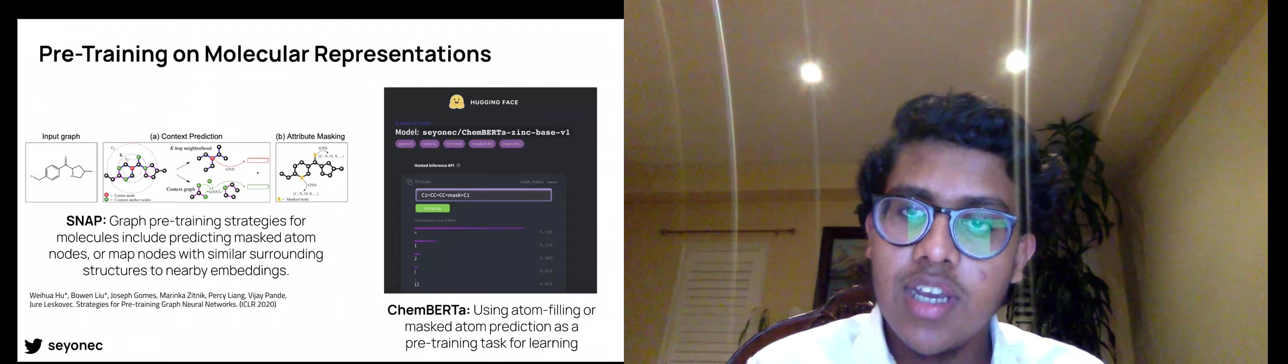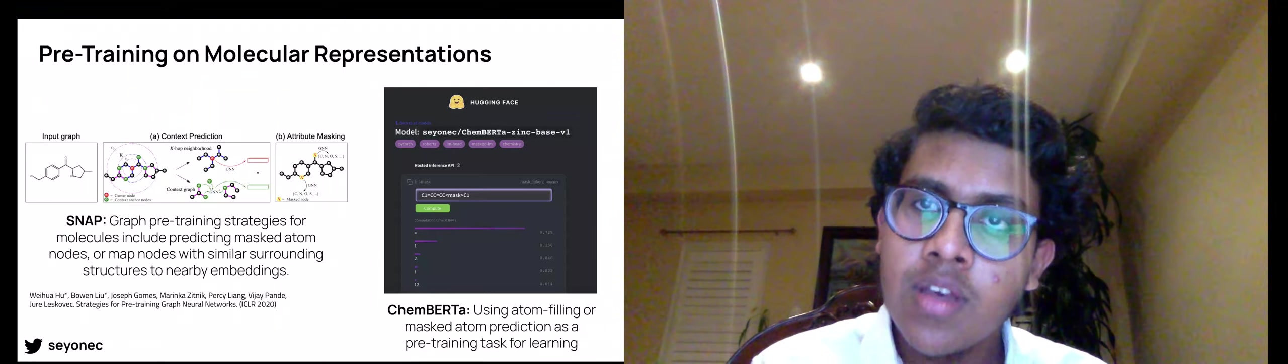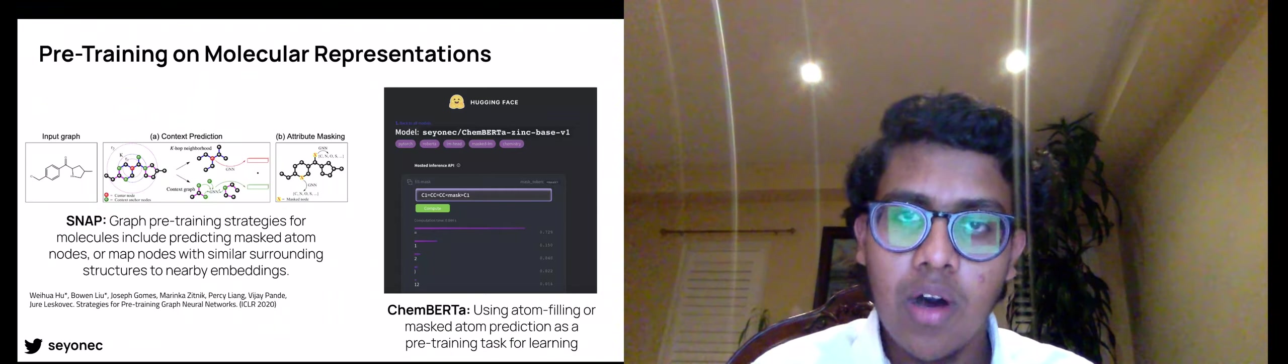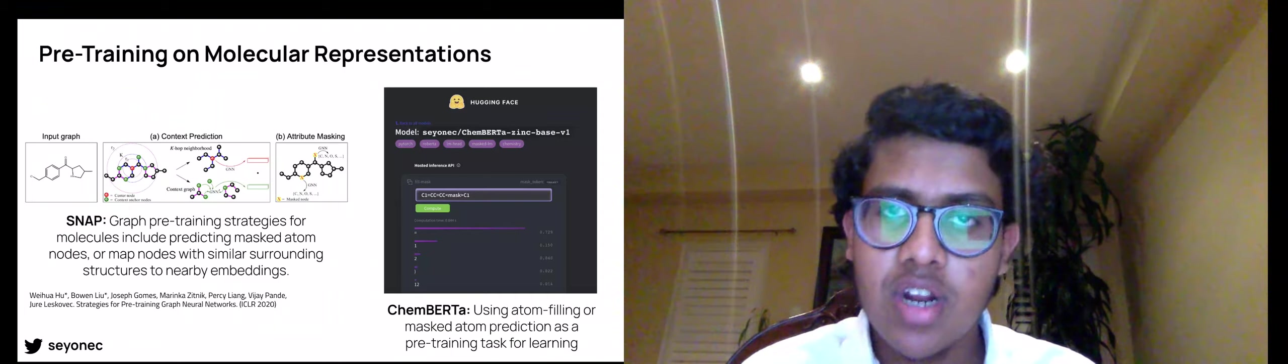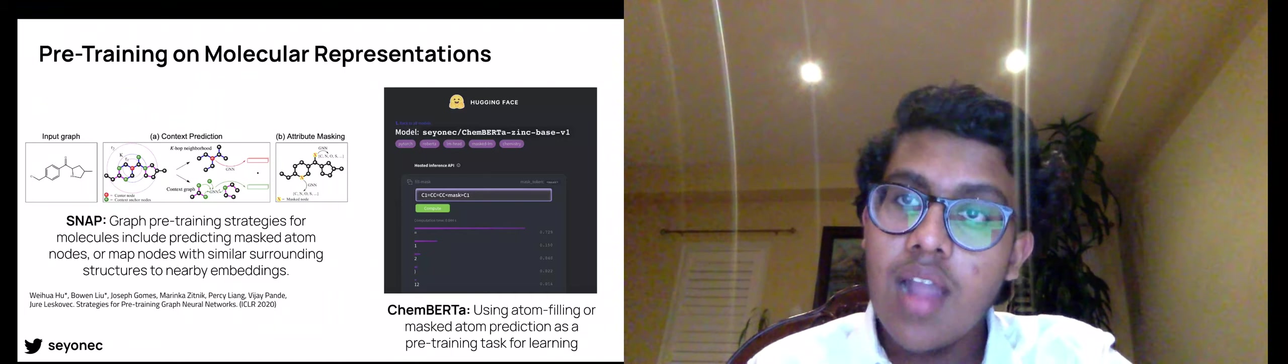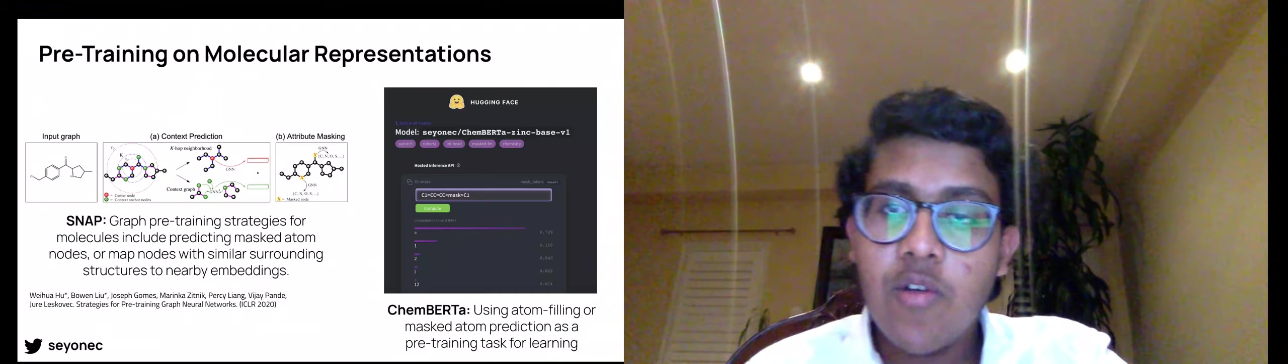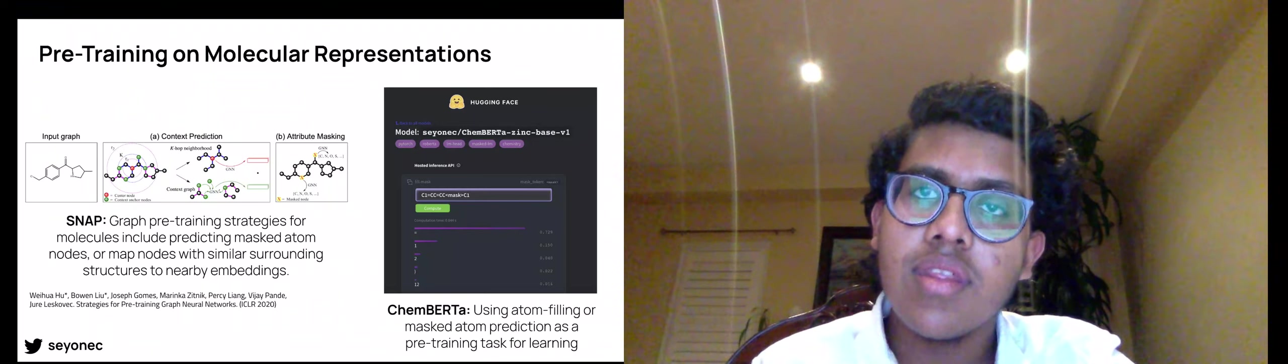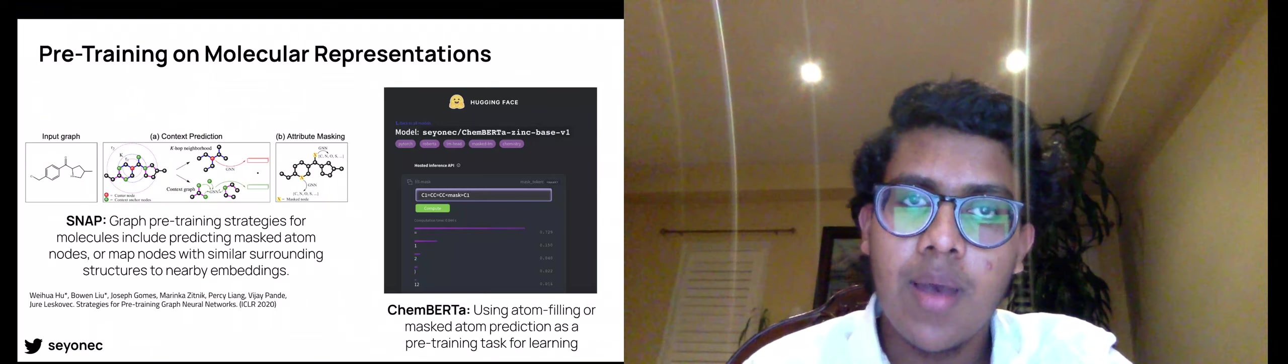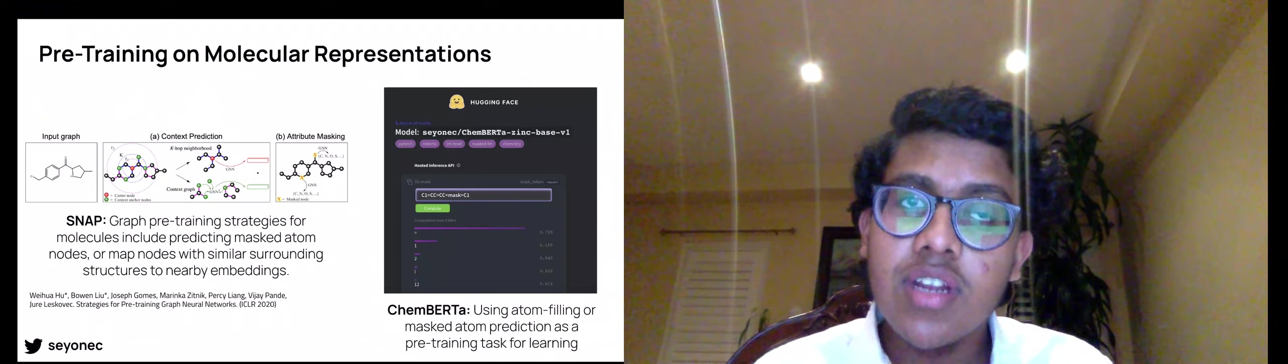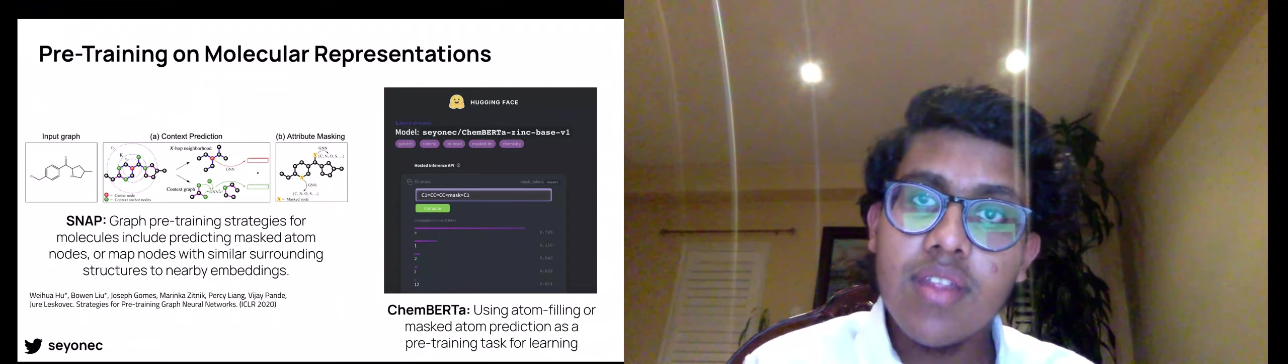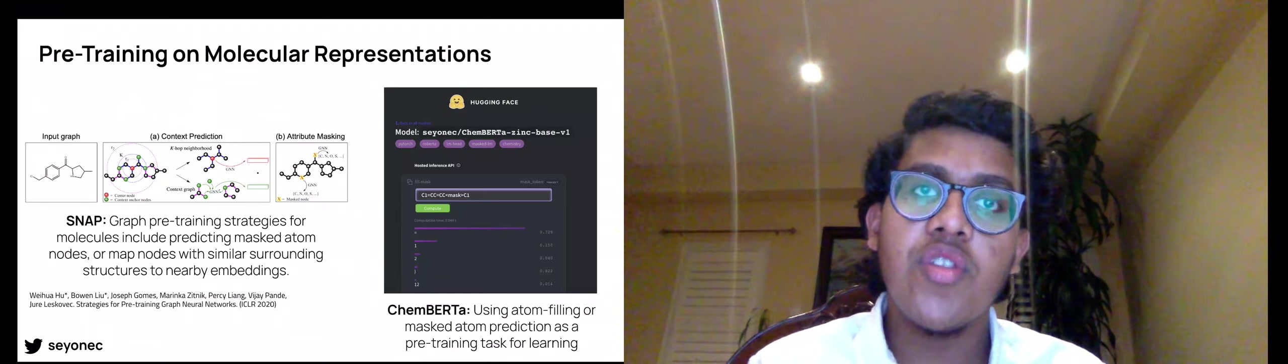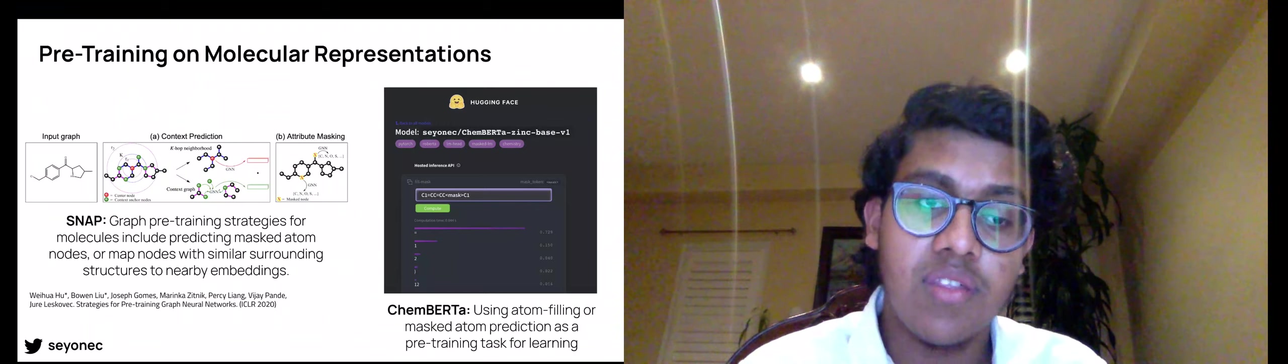Our hypothesis is that in learning to recover masked tokens, the model forms a representational topology of chemical space that should generalize well to property prediction tasks. For pre-training, we curated a dataset of over 77 million SMILES molecules from PubChem and released over 15 pre-trained RoBERTa models on the Hugging Face model hub. These models have collectively generated over 30,000 inference API calls so far.